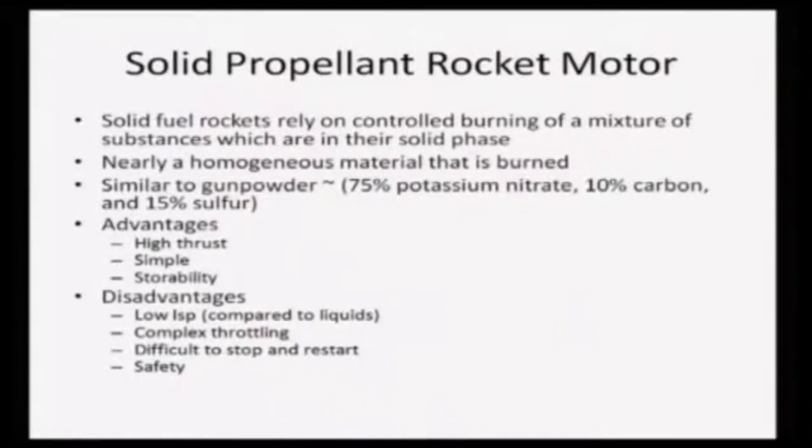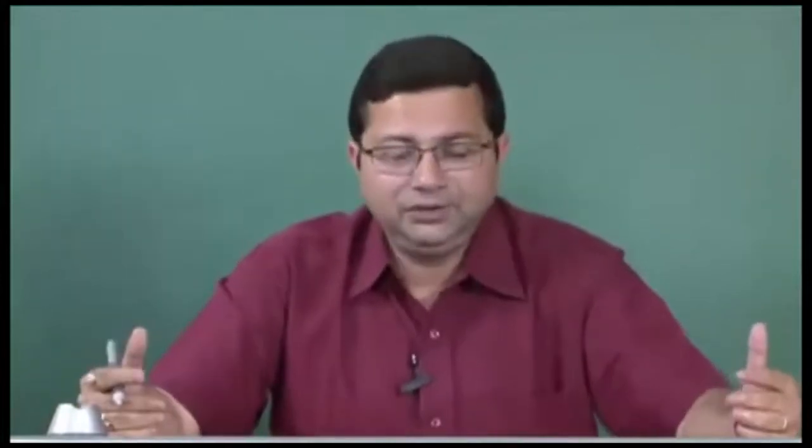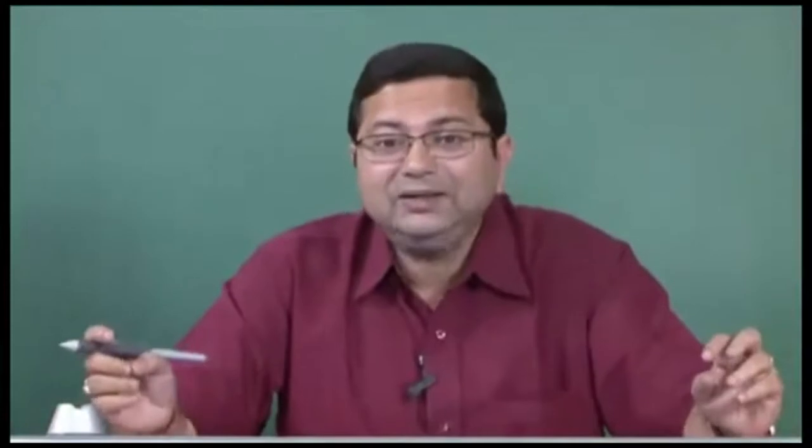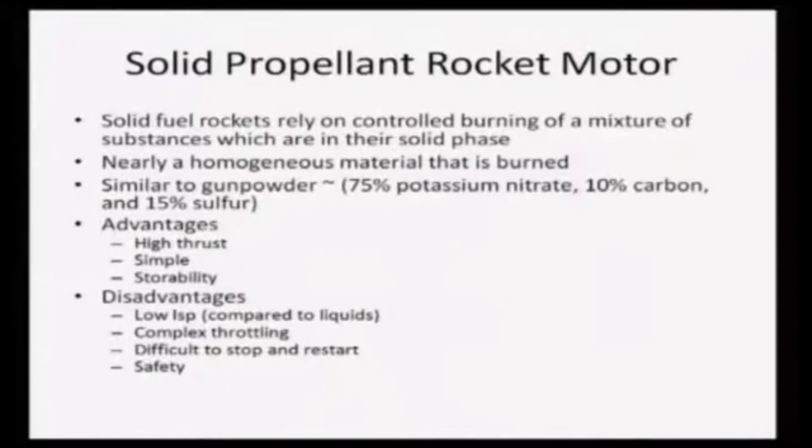The second disadvantage is that throttling — changing the thrust on demand — is fairly complex. It has to be pre-programmed, so you can get thrust variation as you go along, but online throttling is very difficult because changing the burning rate of the solid grain as it flies is almost impossible. There are advanced rockets where specific materials are embedded to give some kind of throttling, but this is very complex.